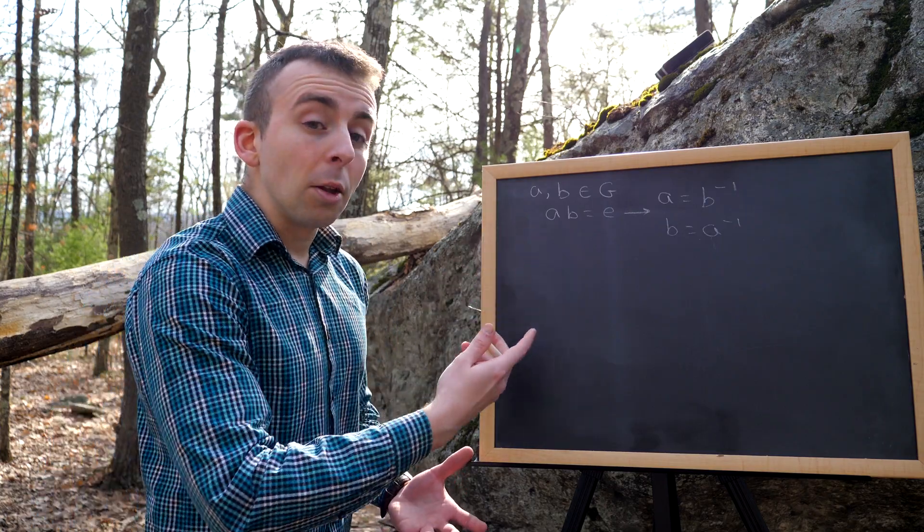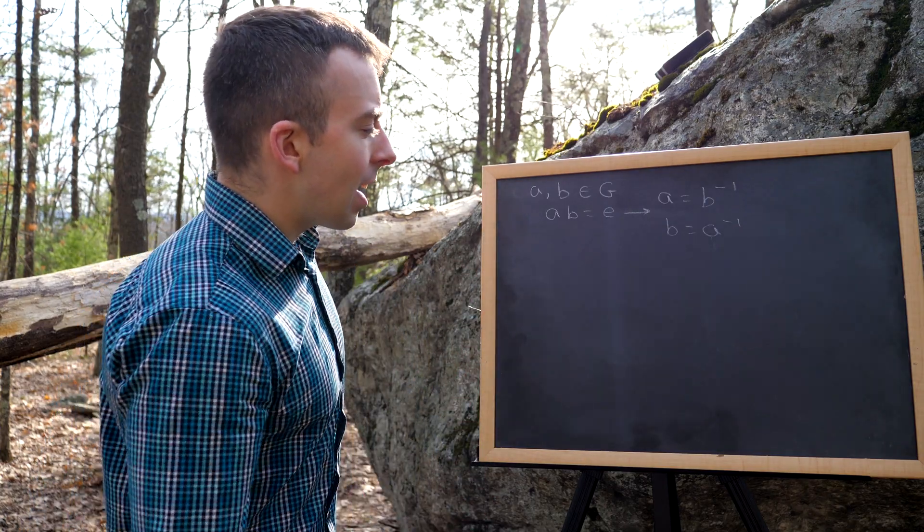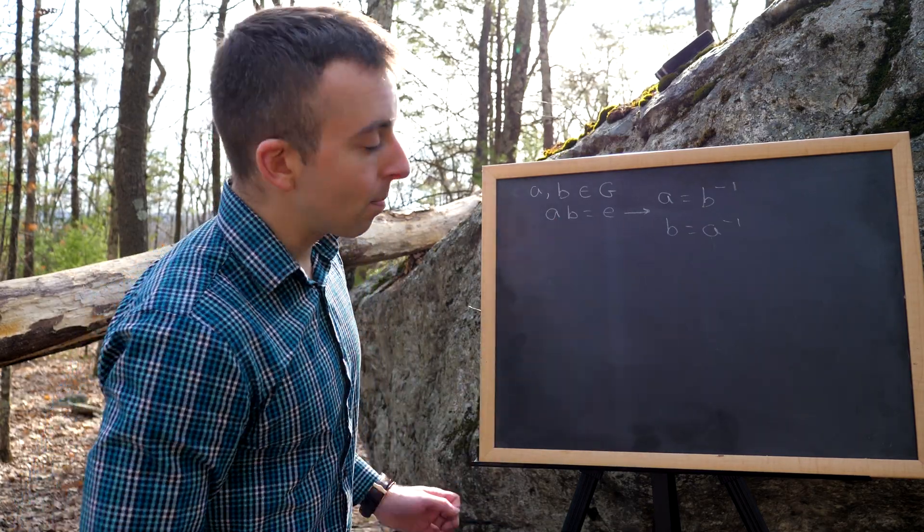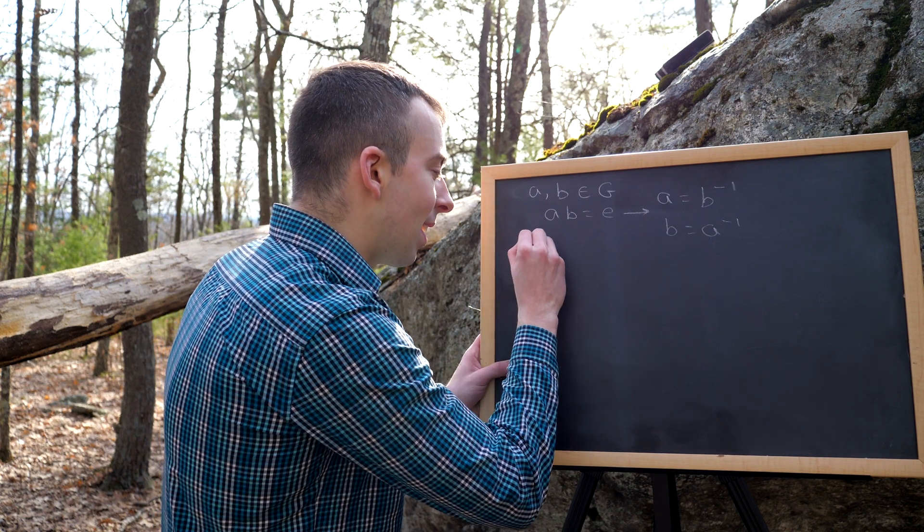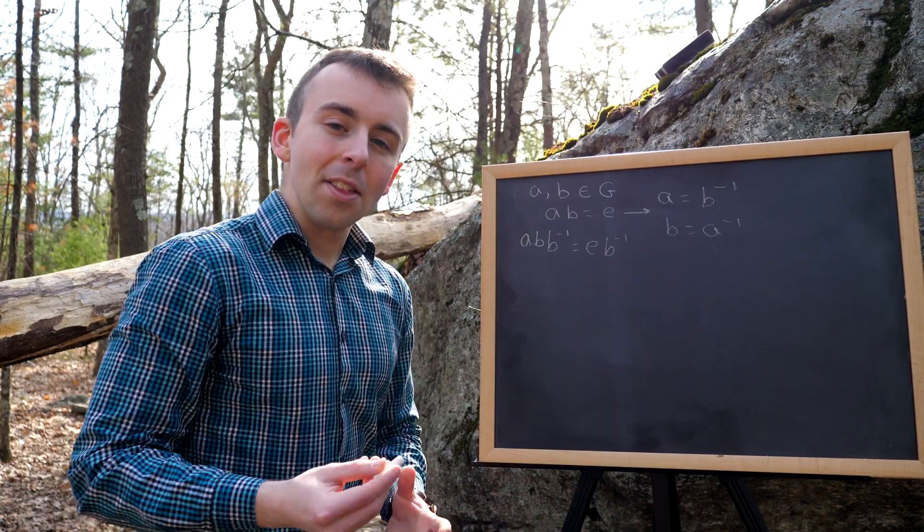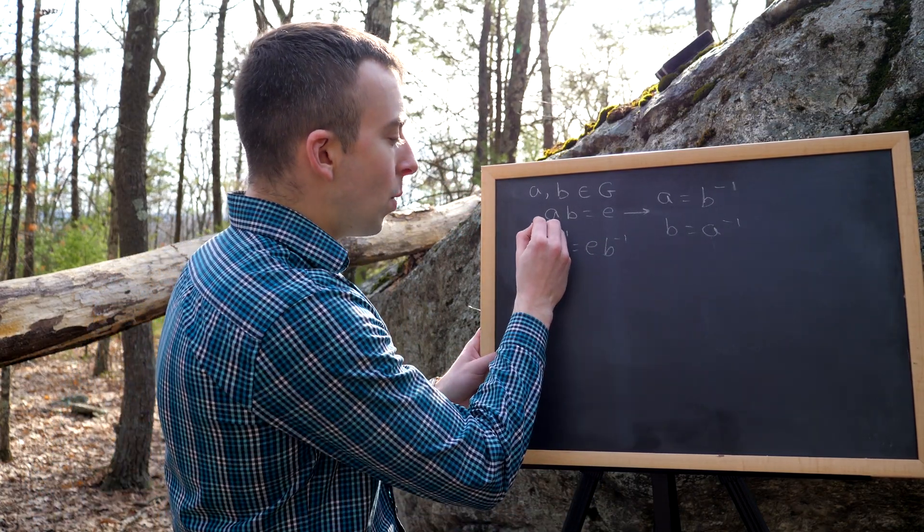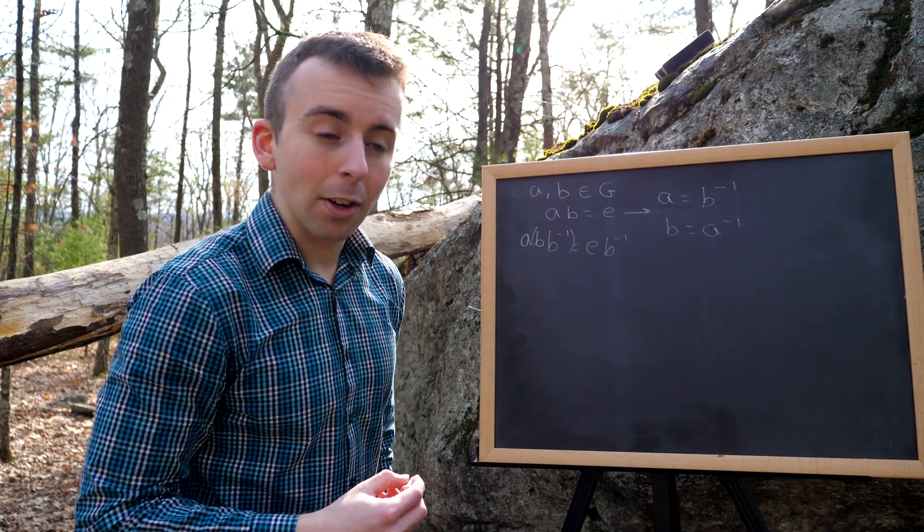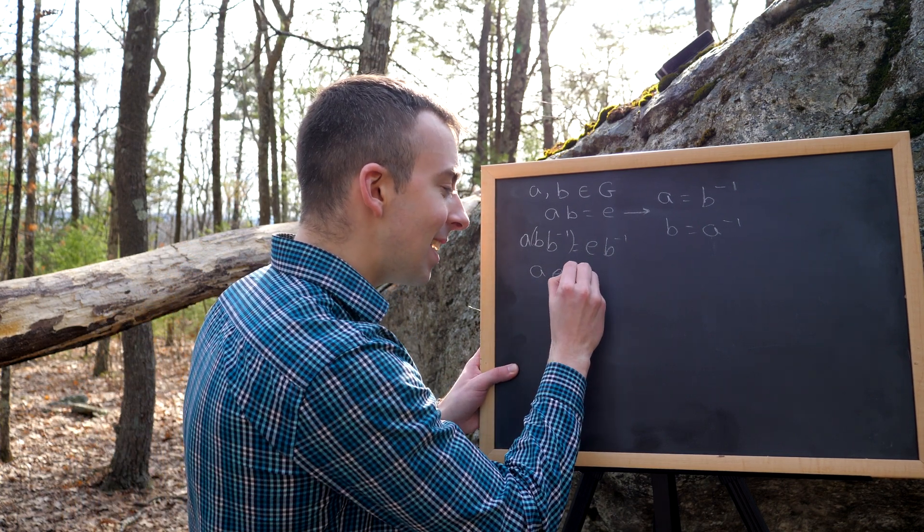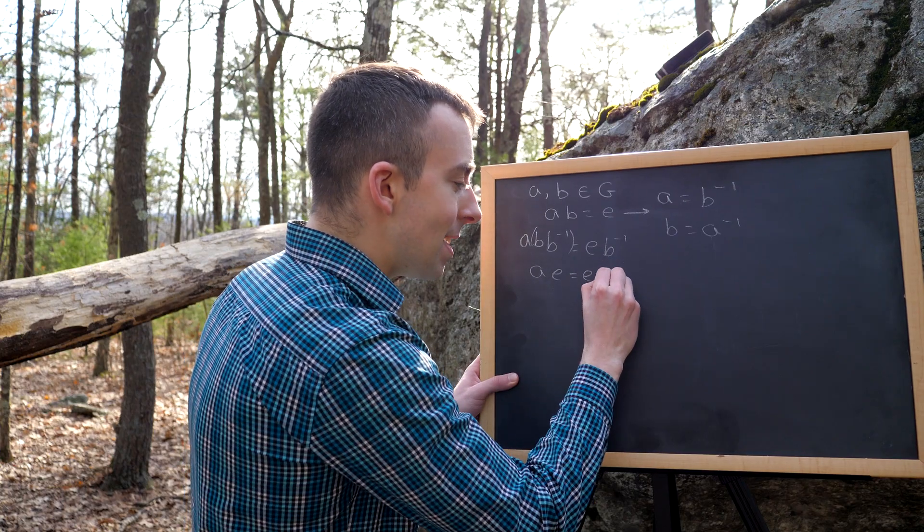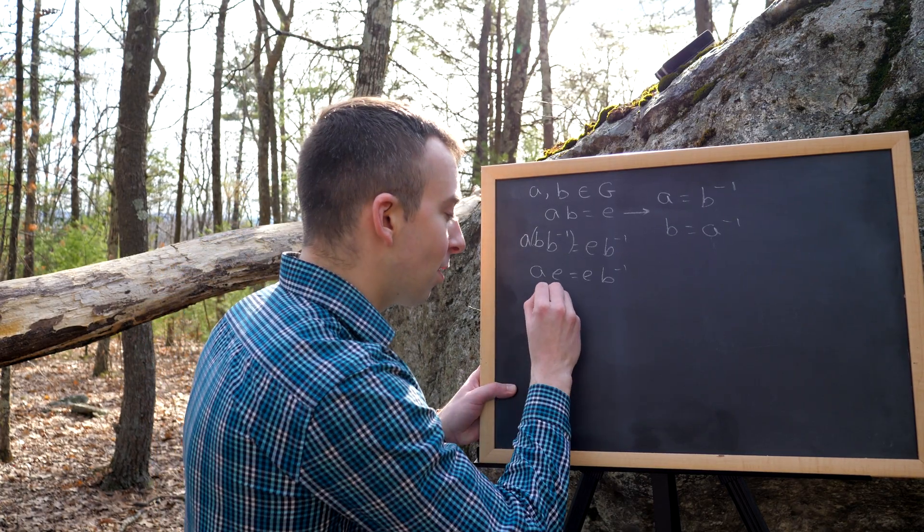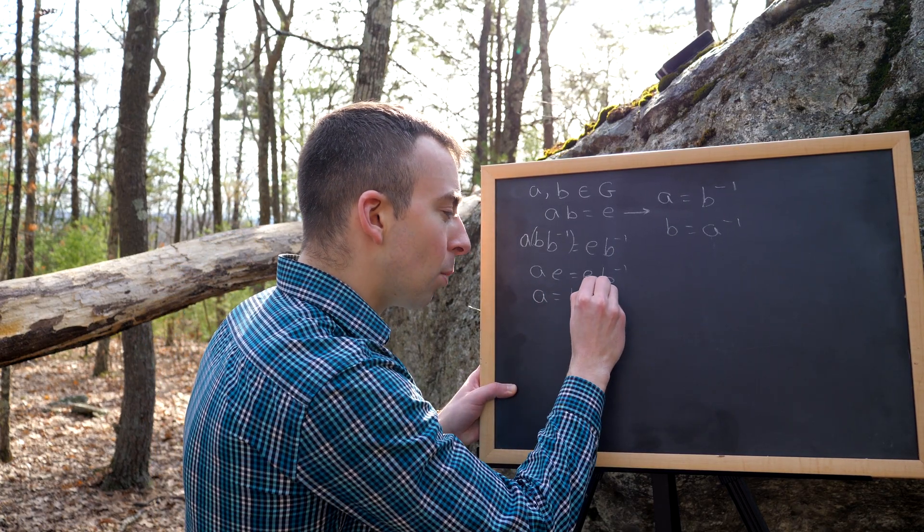Since this is a group, we know that the elements have inverses. So let's multiply both sides of this equation by B inverse on the right. If we do that, we'll have AB B inverse equals E B inverse. Then, by the associative property, we can combine B with B inverse, and that's going to produce the identity element. So we'll have A times the identity E equals E times B inverse. And then by definition of the identity element, this is A and this is B inverse. So we would have that A equals B inverse.